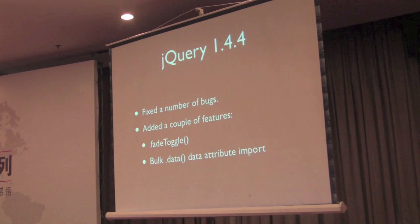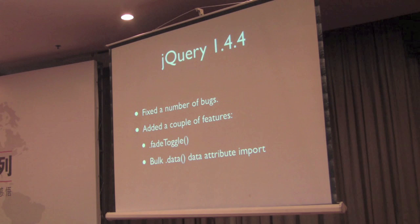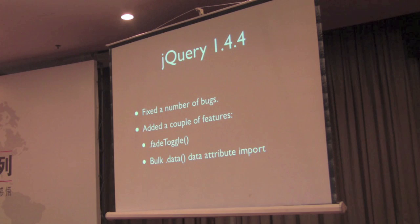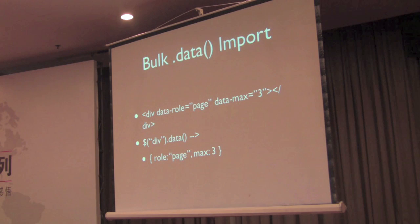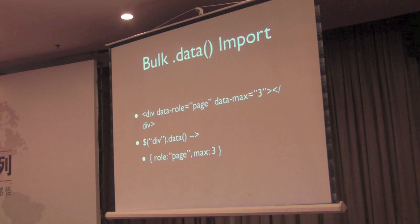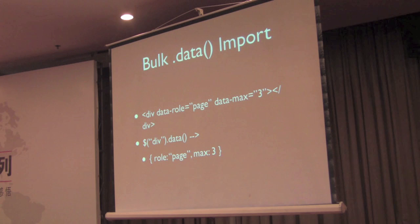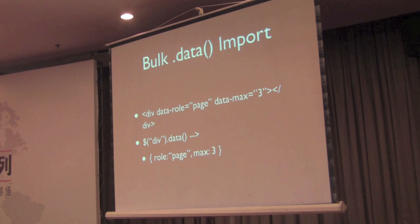We recently released jQuery 1.4.4 — I think it was just last Friday. We again fixed a number of bugs, but we also added two features. One was the new fadeToggle method, which goes along with our existing fadeIn and fadeOut methods. We also have a way to do bulk data importing, which goes along with the data attribute stuff I just mentioned. If you have a bunch of data attributes on an element, you can just call .data and bring them all in. This is very useful because you can have all your settings for a plugin right on an object, import them all in one operation, and then use them as a single object.